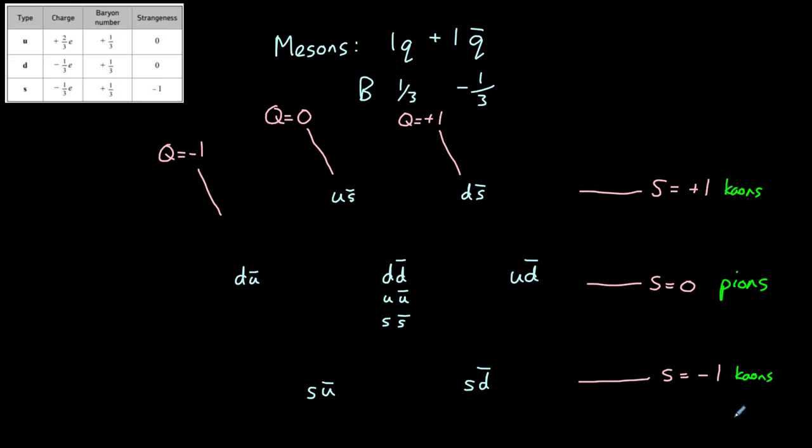Each pion and kaon can be expressed as plus, minus, or zero based on their charge. Although there are nine combinations, note that three of them—the down-anti-down, the up-anti-up, and the strange-anti-strange—all have a charge of zero and a strangeness of zero, so we call them pi-zero particles.